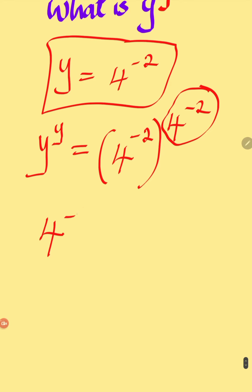Now, 4 to the power of minus 2 is the same thing as 1 over 4 to the power of 2, from the laws of indices, which will give us 1 over 16.